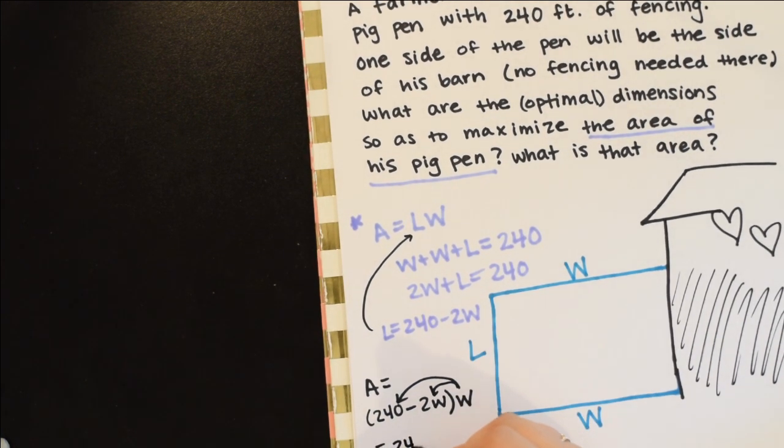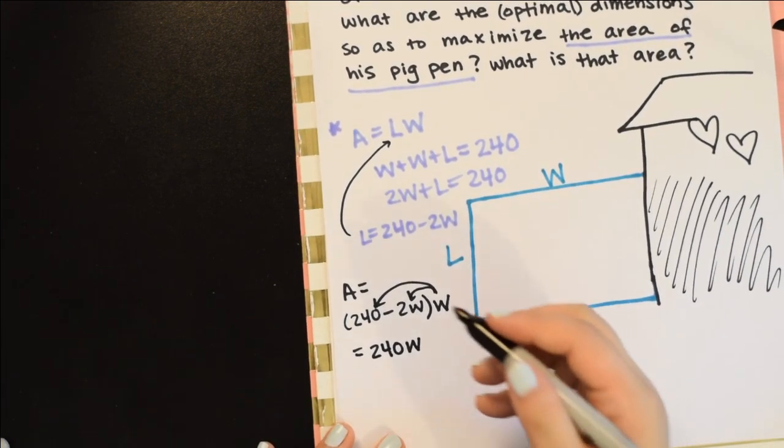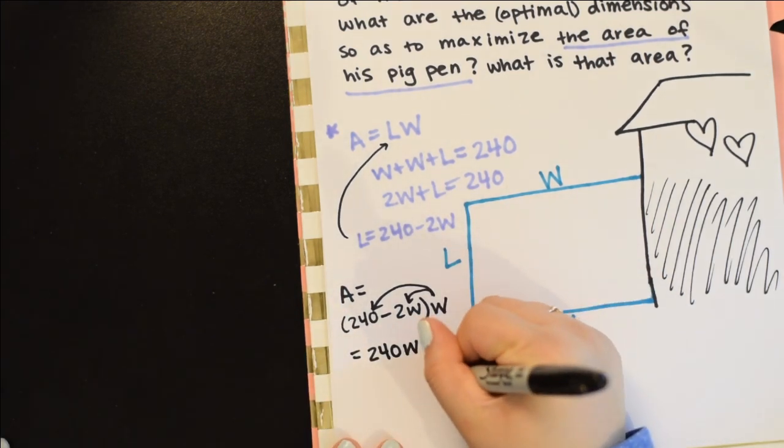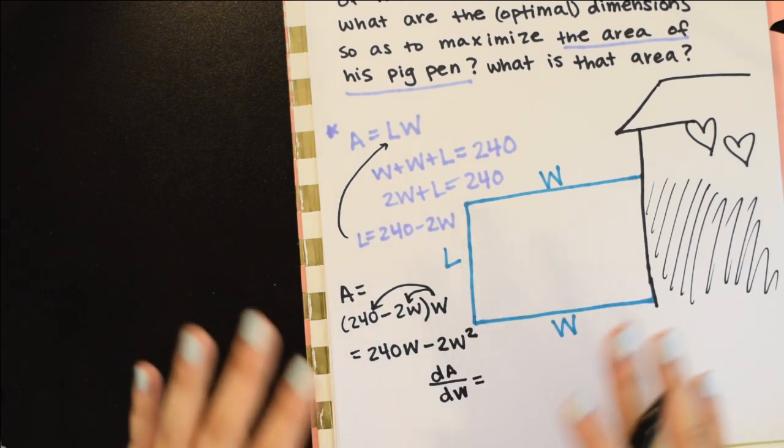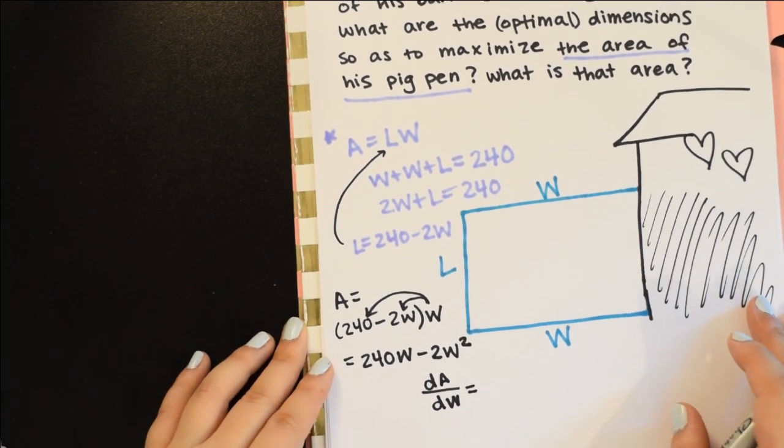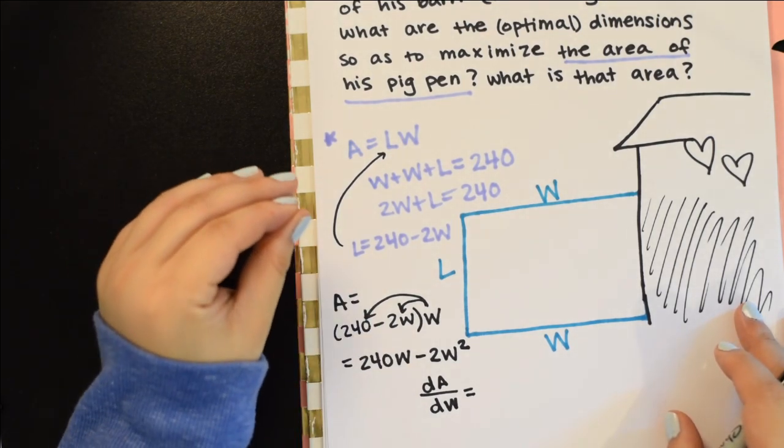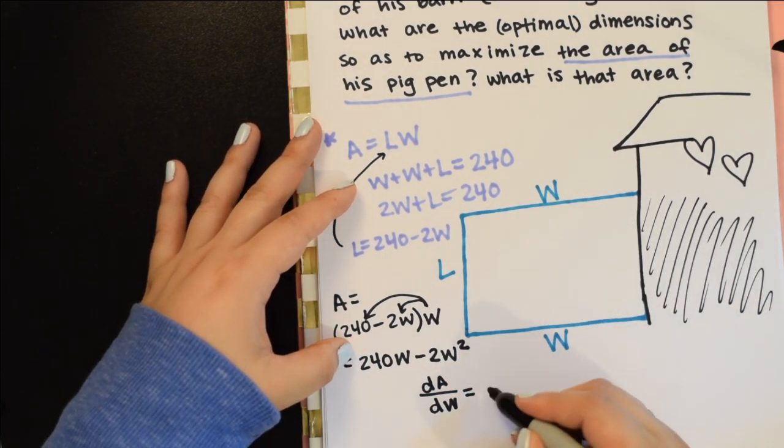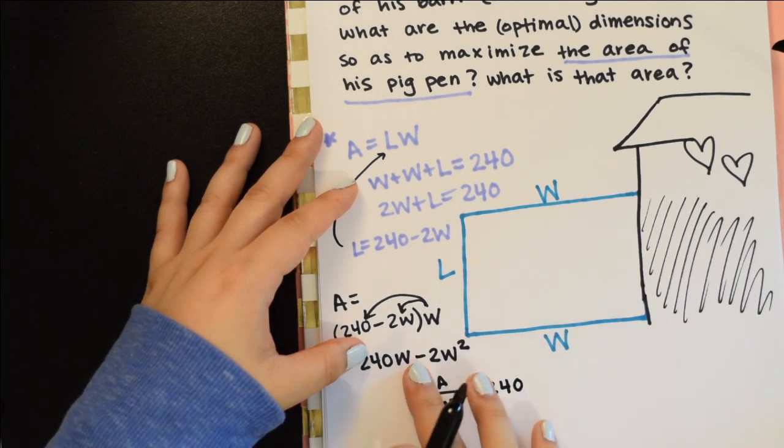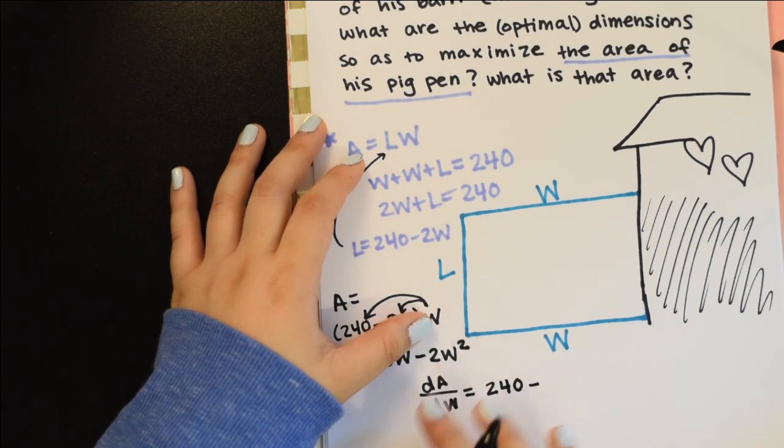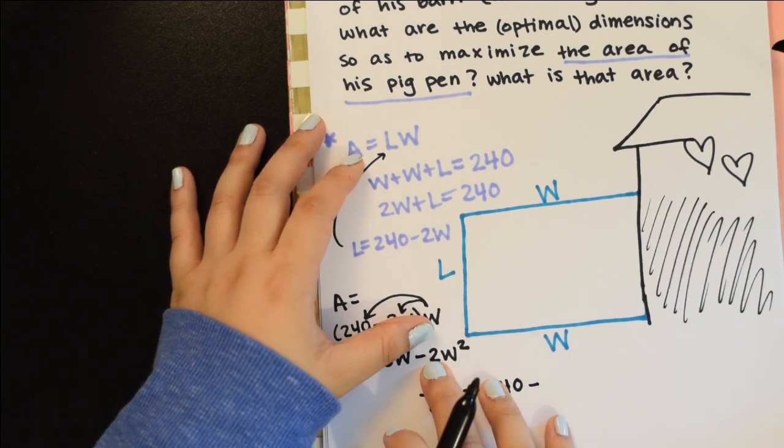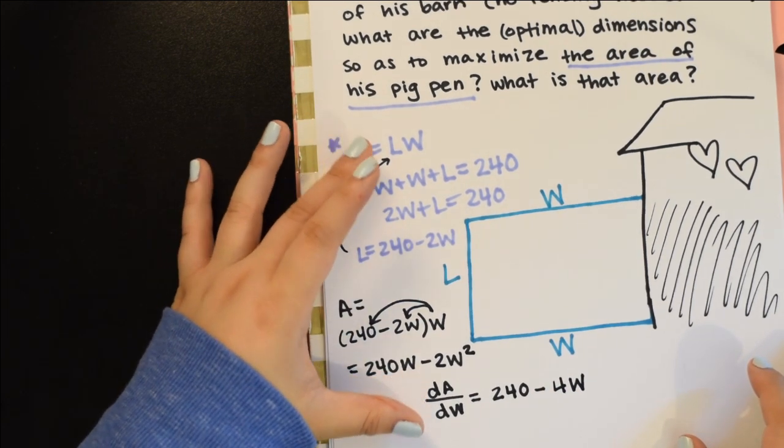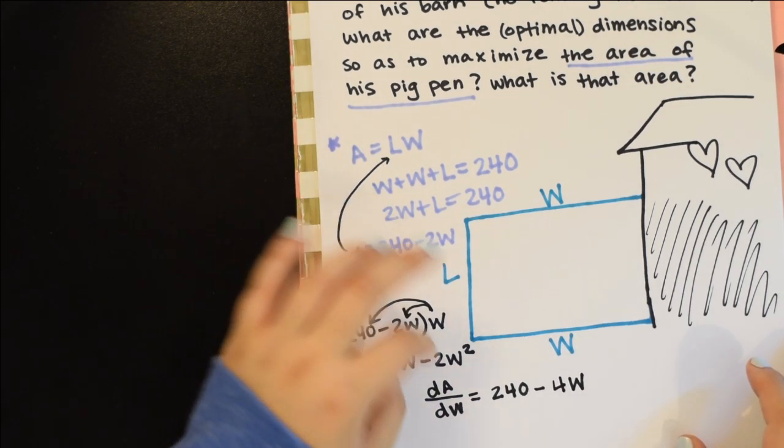Now I'm going to take the derivative with respect to W. If you want to only memorize one thing for these optimization questions: take the derivative, set it equal to zero, solve for your variable. So dA/dW equals 240 minus 4W.